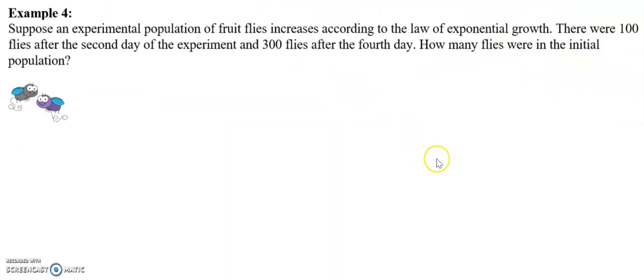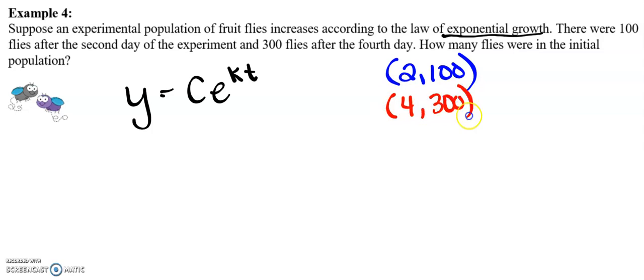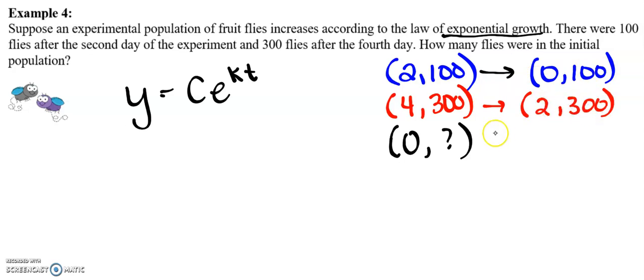All right, this one's going to look a little bit different. Suppose an experimental population of fruit flies increases according to the law of exponential growth. There were 100 fruit flies on the second day of the experiment. And on the fourth day, there were 300. How many fruit flies were in the initial population? Well, something we can do here is we can consider exponential growth on an xy curve. And instead of calling this 2 comma 100, let's go ahead and use this as our initial condition.